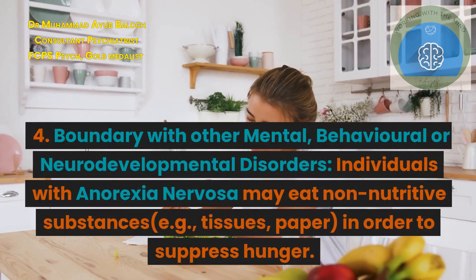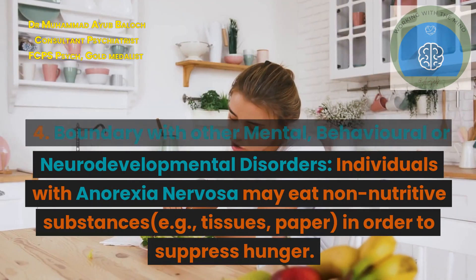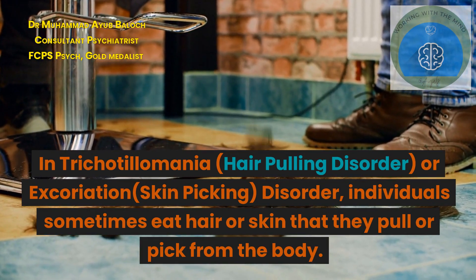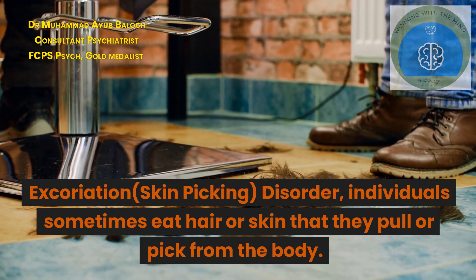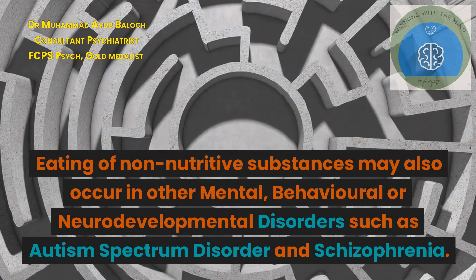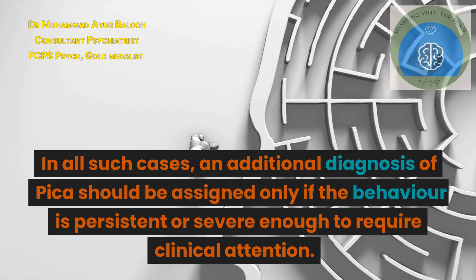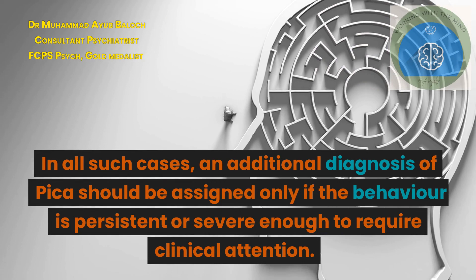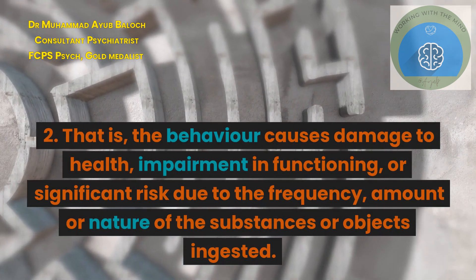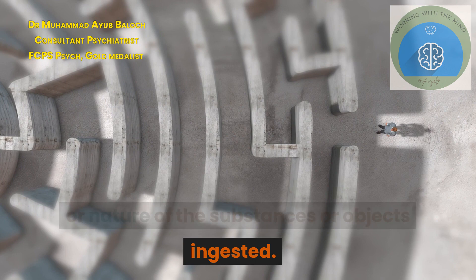Boundary with other mental, behavioral or neurodevelopmental disorders: individuals with anorexia nervosa may eat non-nutritive substances, for example tissues, in order to suppress hunger. In trichotillomania (hair-pulling disorder) or excoriation (skin-picking disorder), individuals sometimes eat hair or skin that they pull or pick from the body. Eating of non-nutritive substances may also occur in other mental, behavioral or neurodevelopmental disorders such as autism spectrum disorder and schizophrenia. In all such cases, an additional diagnosis of Pica should be assigned only if the behavior is persistent or severe enough to require clinical attention — that is, the behavior causes damage to health, impairment in functioning, or significant risk due to the frequency, amount or nature of the substances or objects ingested.